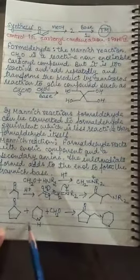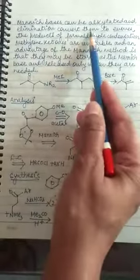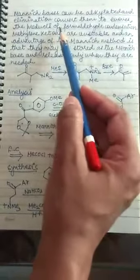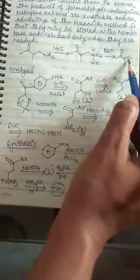I have taken one more example here of the Mannich reaction. Now here it is the secondary amine that is the piperidine. Now these Mannich bases can be alkylated and the elimination will give us the enones. It is a very good utility of the Mannich reaction because the product of formaldehyde condensation that is the methyl ketones, they are unstable.